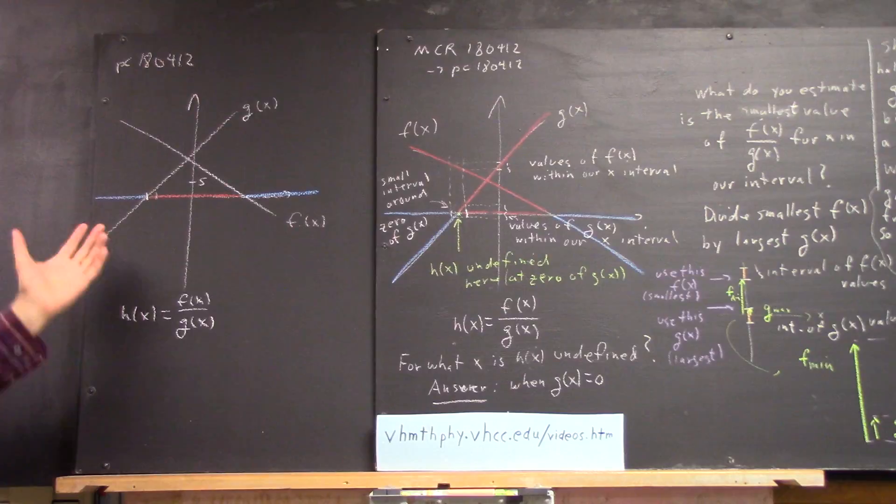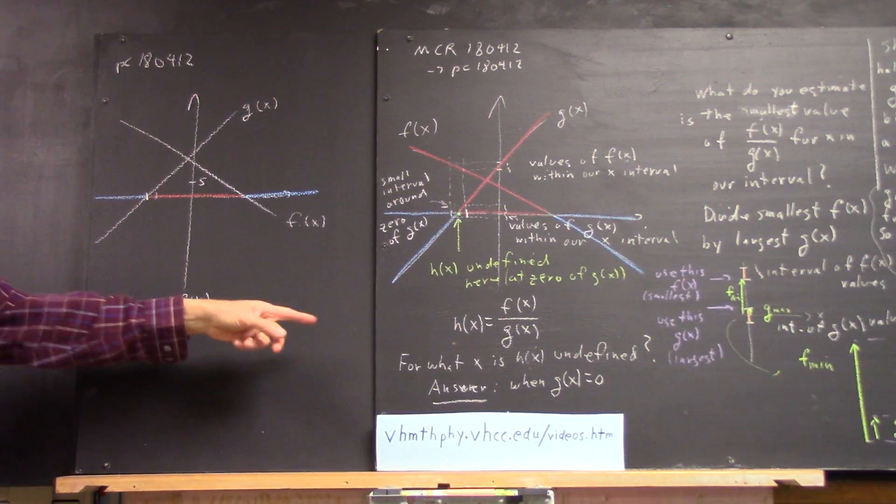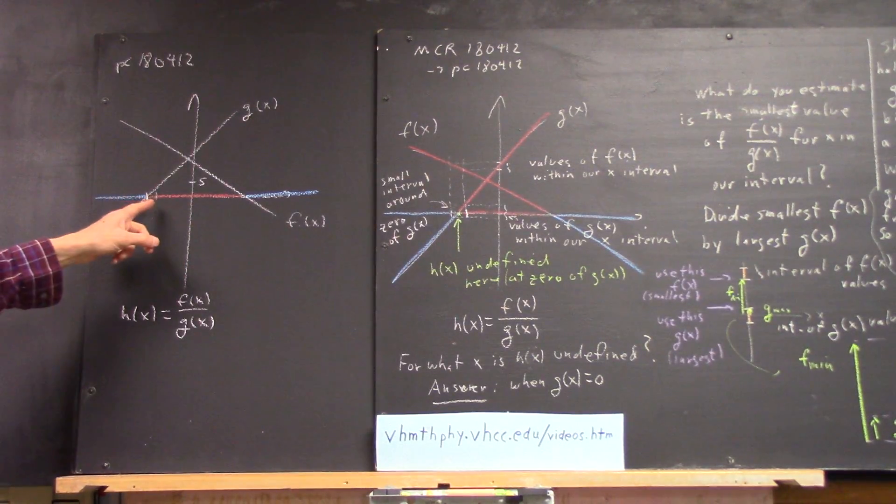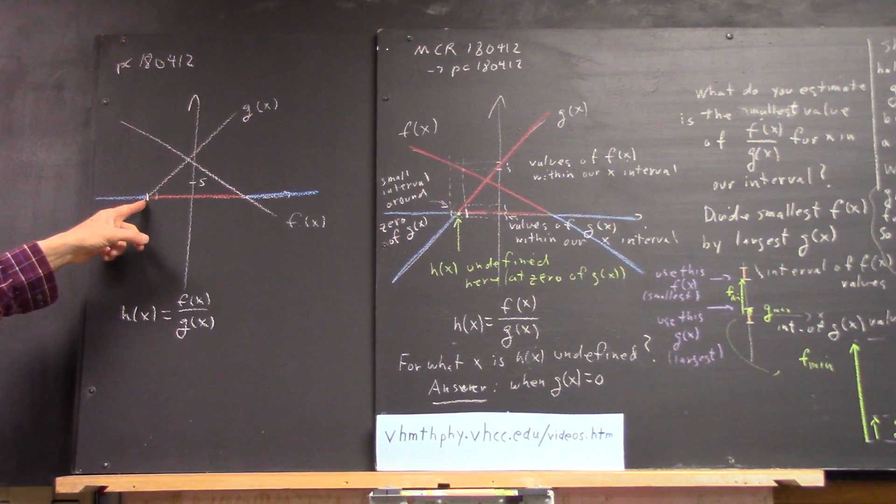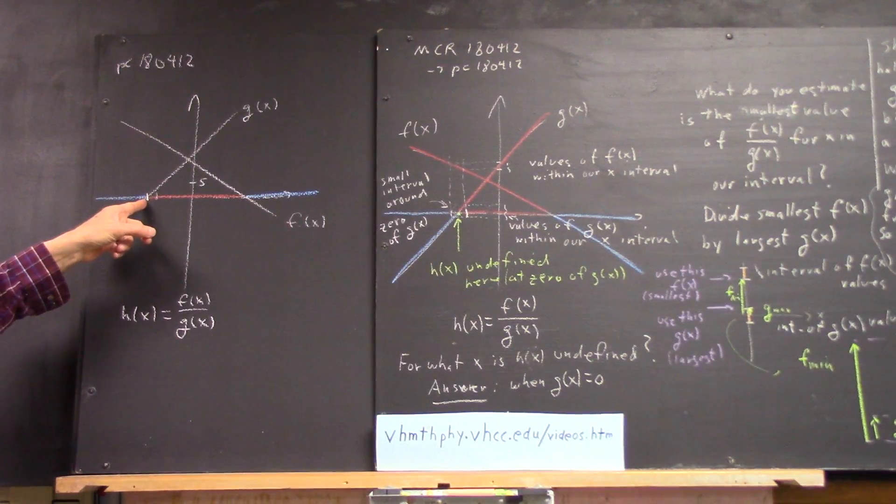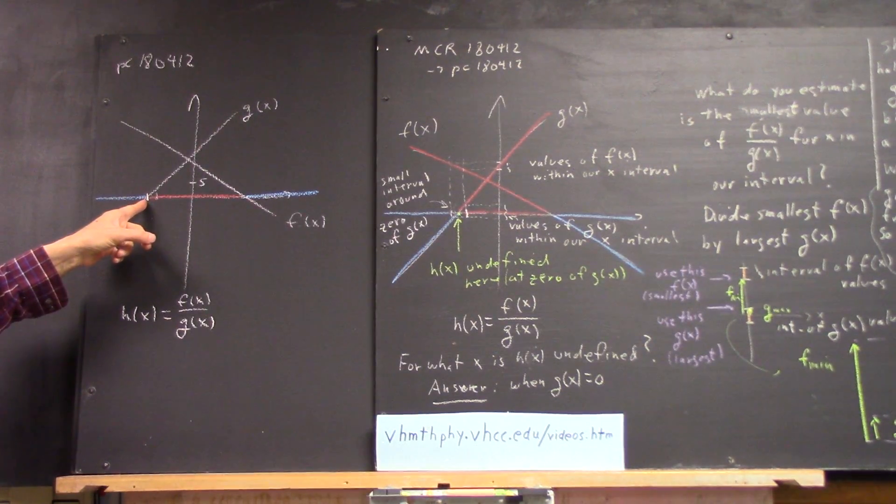So here's our graph, same graph we had before. Here's a point where g of x is zero. That's our zero of g of x. That's where its function is not defined, right?